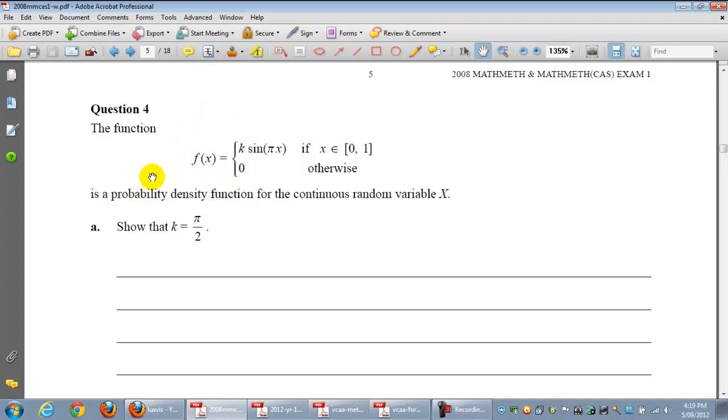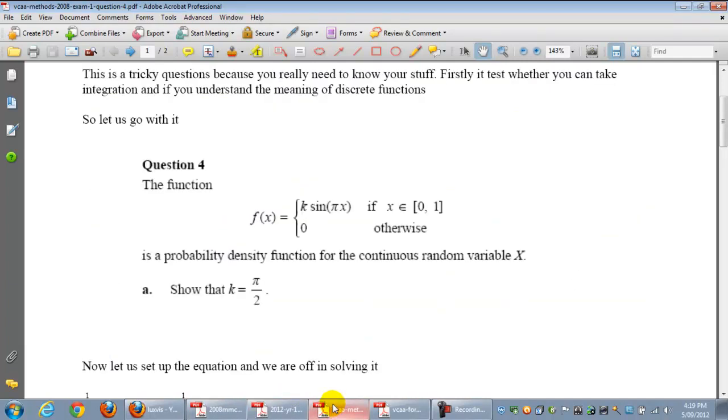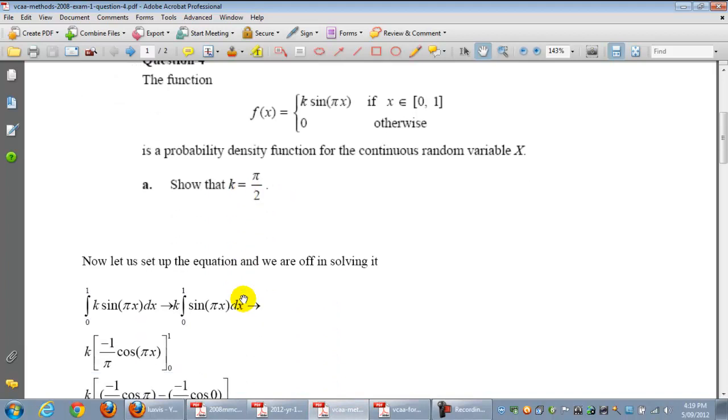You notice the question says that this function here, k sin pi x, which x is between 0 and 1, otherwise it's 0, is a probability density function. So what does that mean? Straight away you know that the area between 0 and 1 for this function must be equal to 1. And so we're going to use that fact to arrive at our show factor.